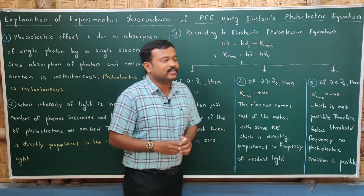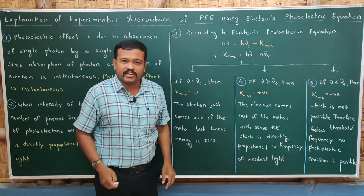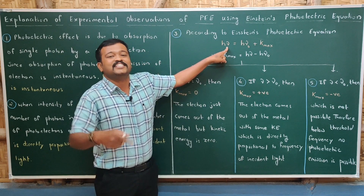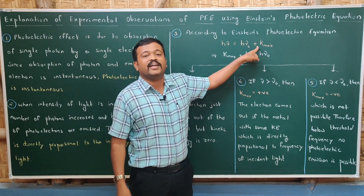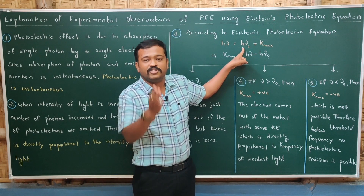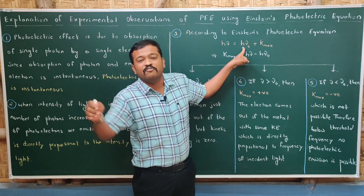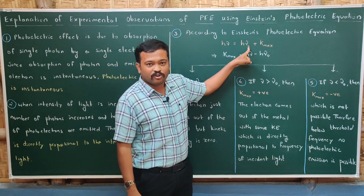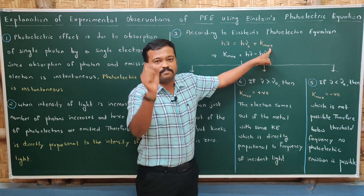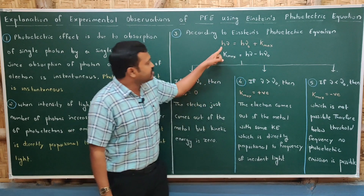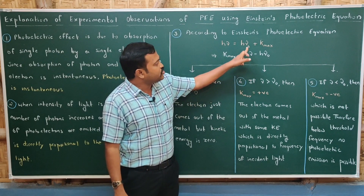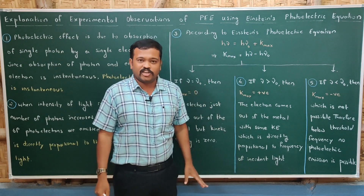Now, by using Einstein's photoelectric equation, the light of energy hν is incident on a metal. This energy is absorbed by the electron and used in two ways: to come out of the metal (equal to work function hν₀) and to move forward (kinetic energy K_max). So: hν = hν₀ + K_max, which gives K_max = hν − hν₀. Let us now take three cases.